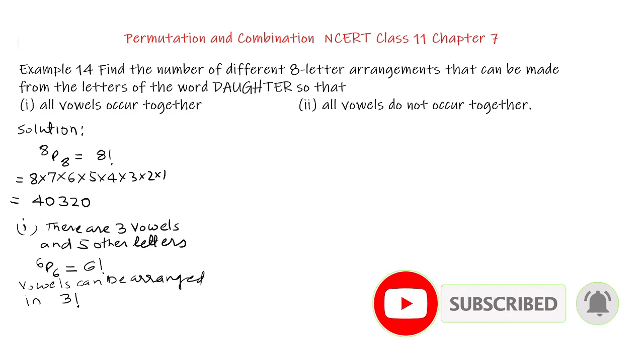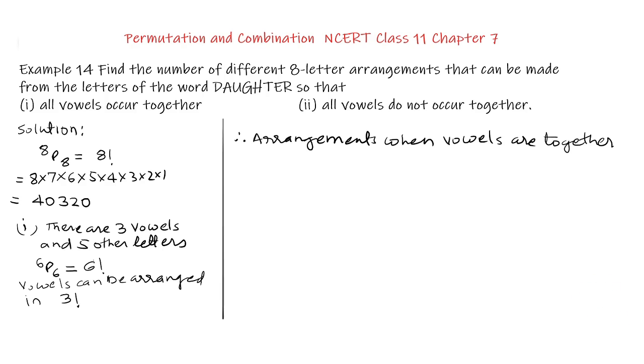So vowels can be arranged in themselves in factorial 3 ways. Therefore, arrangements when vowels are together equal to 6 factorial multiplied by 3 factorial. 6 factorial is 720.